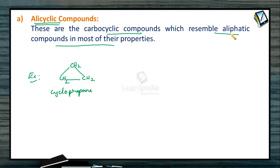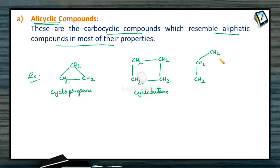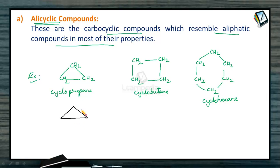Another example is cyclobutane, where four carbon atoms link with each other to form a closed ring. Then cyclohexane, where six carbon atoms are linked to form a closed ring. For understanding purposes, we write these compounds using the bond-line method — simply lines where each vertex represents CH2. In the bond-line method, there is no need to write carbon and hydrogen atoms; only atoms other than these two are written.